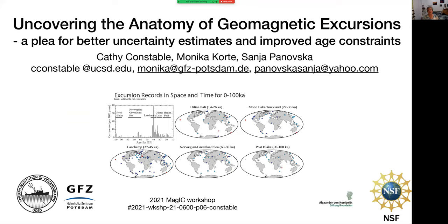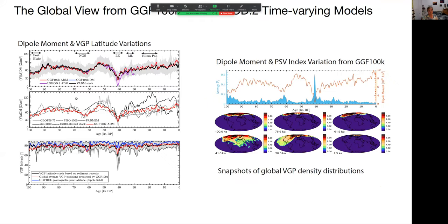My name is Cathy Constable. My poster is about looking at the record of geomagnetic excursions in Paleo field models. Here you see the temporal distribution and the spatial distribution of the various records that we have over the past 100,000 years. I'm going to use two time-varying field models: LS mod.2 for 50 to 30,000 years ago, and GGF 100k, which spans the past 100,000 years.